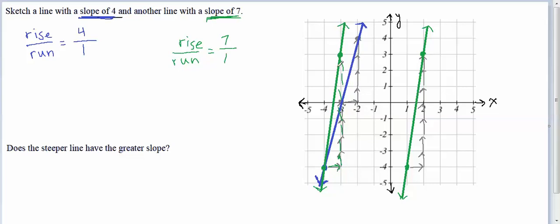So we can see the line with the greater slope was the line with the slope of 7. It's also a steeper line than the line with the slope of 4. So we can say, yes, the steeper line has the bigger or the greater slope. The greater slope.